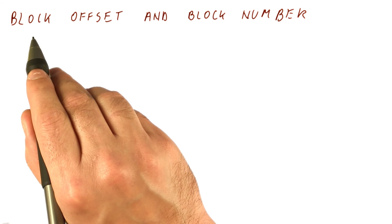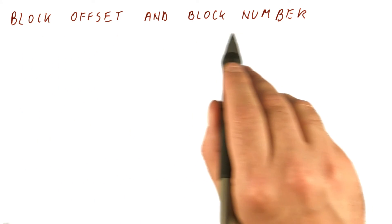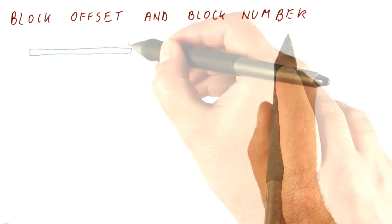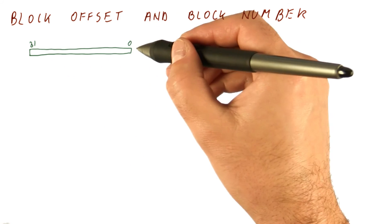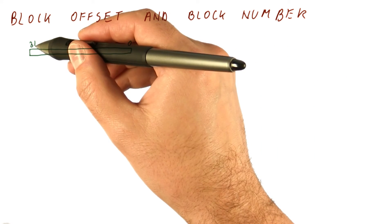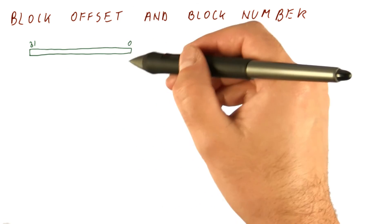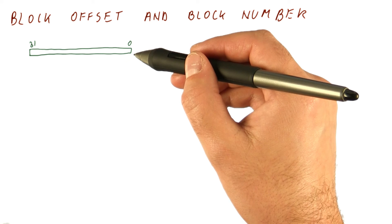Let's talk about how we determine the block offset and block number given an address. Let's say the processor produces a 32-bit address with bits numbered from 0 through 31. This is the address of the location the processor wants us to find in the cache.